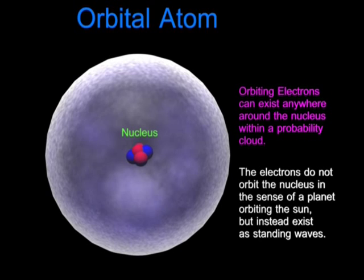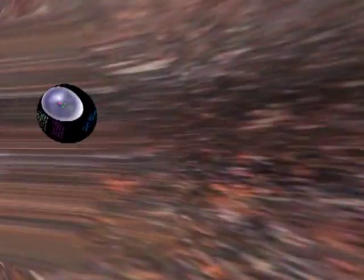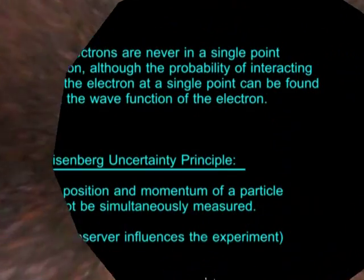Scientists used to think of an atom as having a nucleus consisting of protons and neutrons while the electrons spin around the nucleus in a fixed orbit. Today, it is theorized that the electrons don't spin around the nucleus, but rather that they exist in a probability cloud around the nucleus. Thus, you can never predict the exact position of an electron. The electron can exist at any point around the nucleus at the same time.